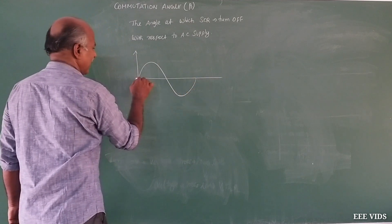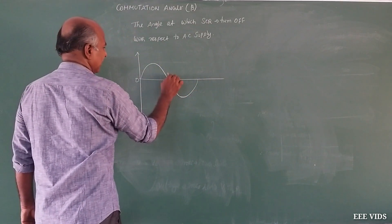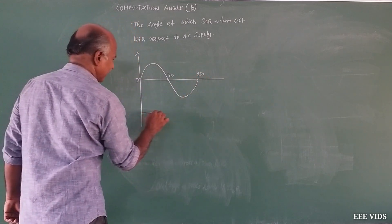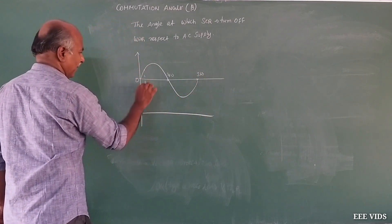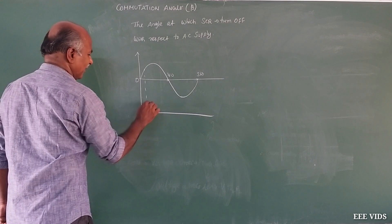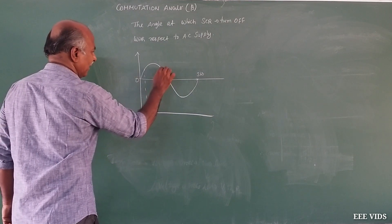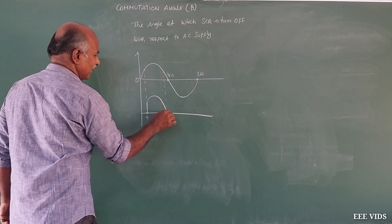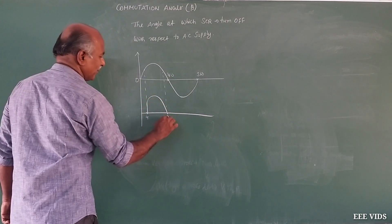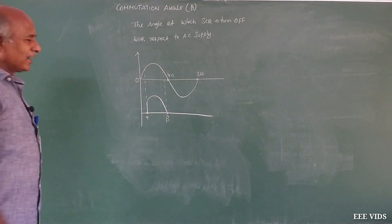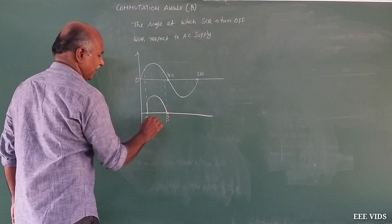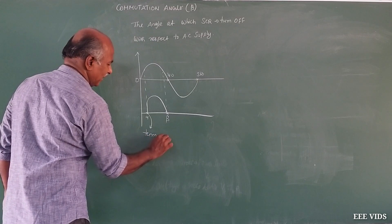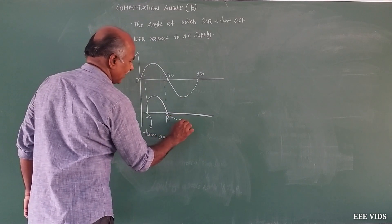For example, the AC supply goes from 0 to 360 degrees. We give the gate pulse triggering angle at alpha, so the SCR starts conduction at alpha. The angle at which the SCR goes to the off state is beta. So alpha is the turn-on angle and beta is the turn-off angle of the SCR.